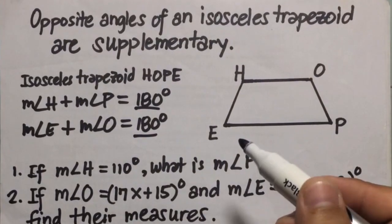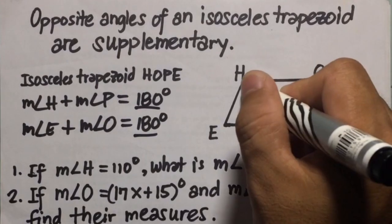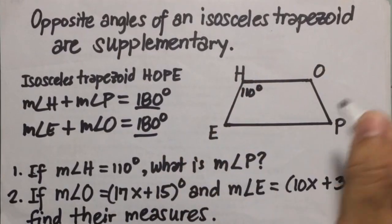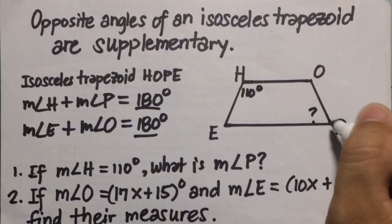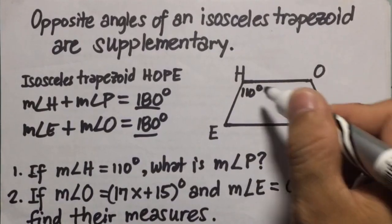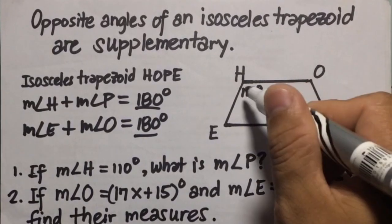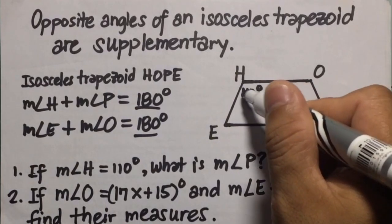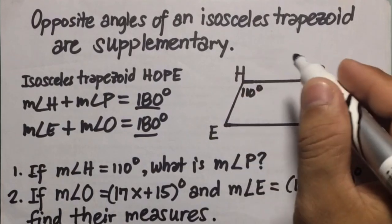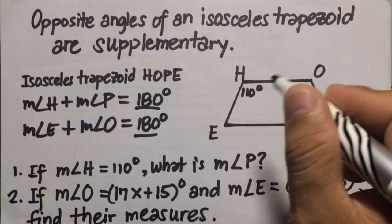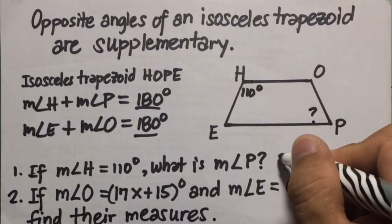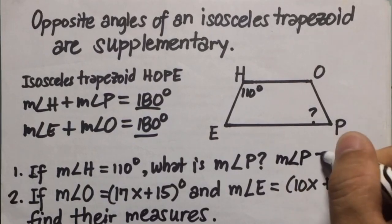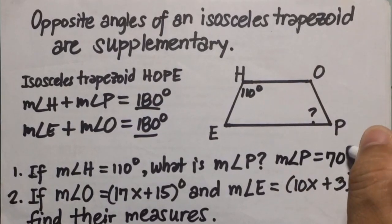Number one: if the measure of angle H is 110 degrees, what is the measure of angle P? Since the total of these two is 180 degrees and measure of angle H is 110, we subtract: 180 minus 110 equals 70 degrees. So the measure of angle P is 70 degrees.